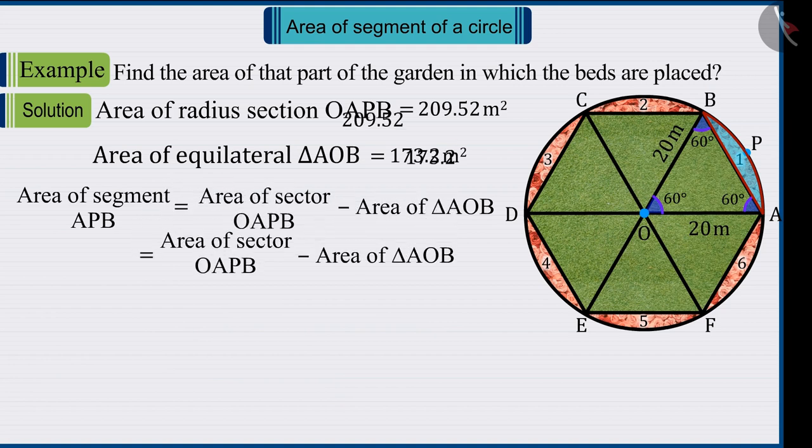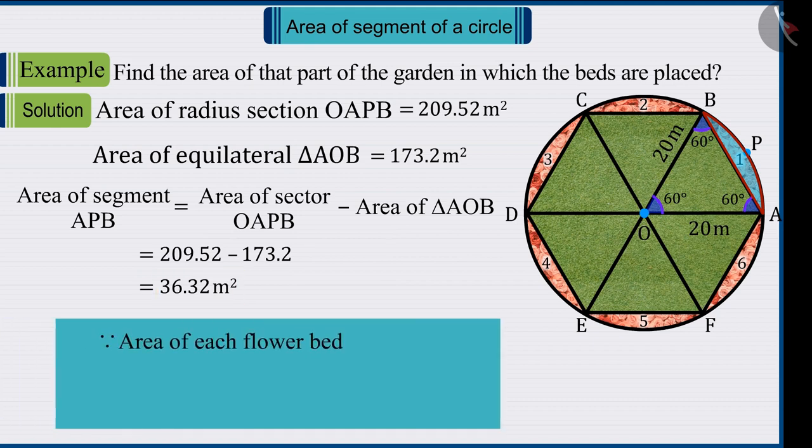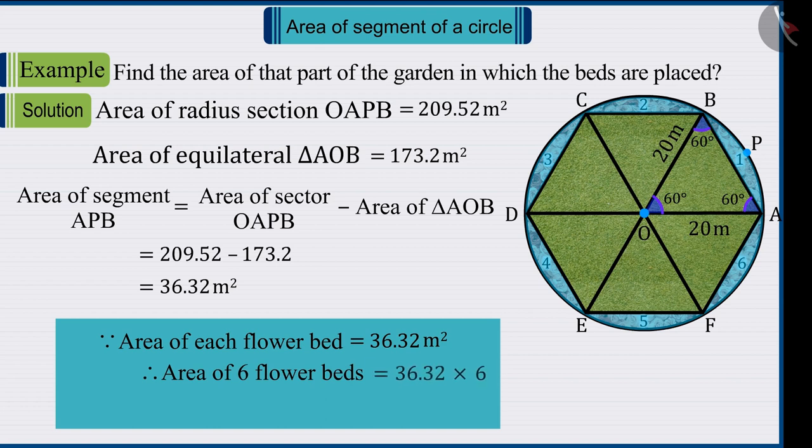On solving which, the area of the segment APB is 36.32 square meters. That is, the area of each flower bed is 36.32 square meters. Therefore, we can say that the area of the total flower beds is 217.92 square meters.